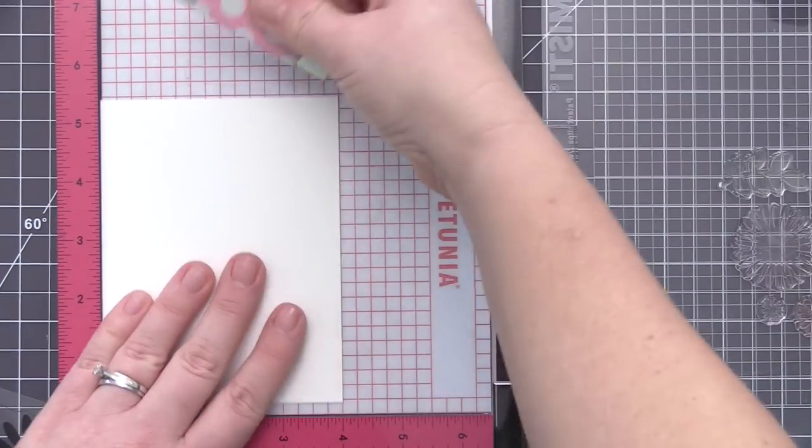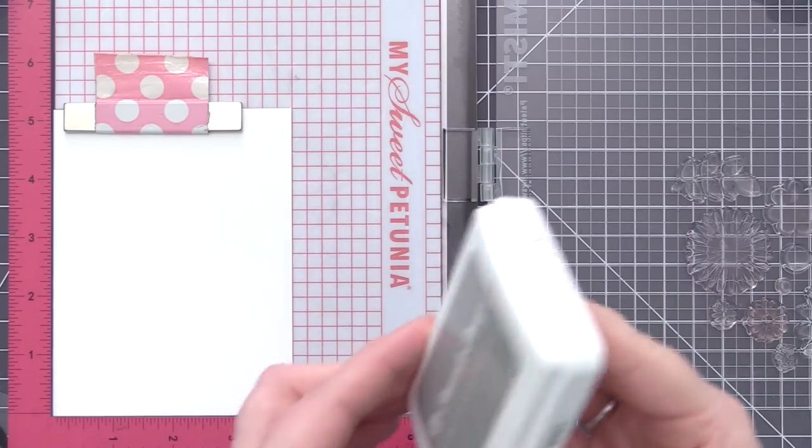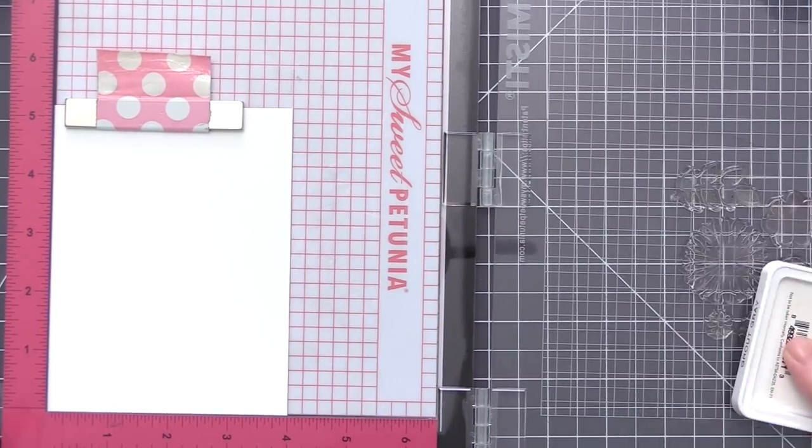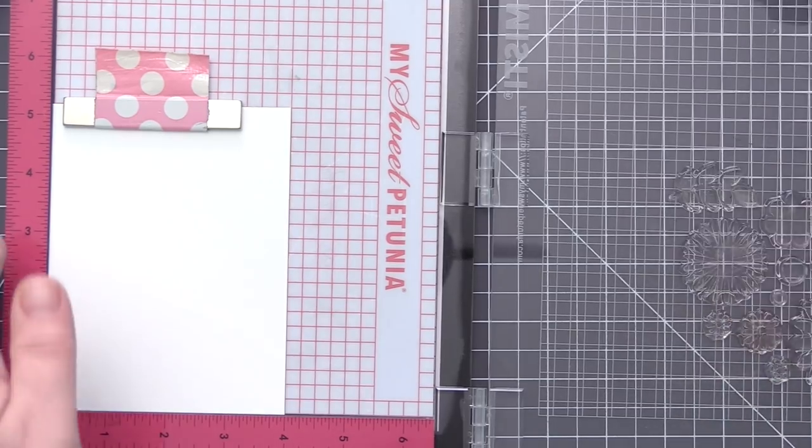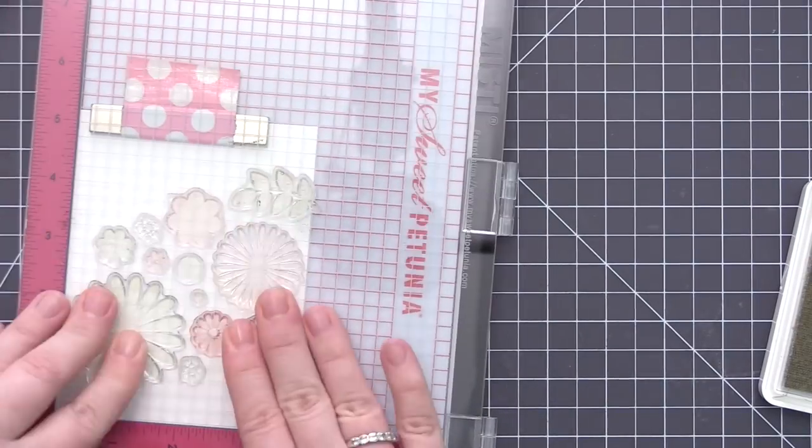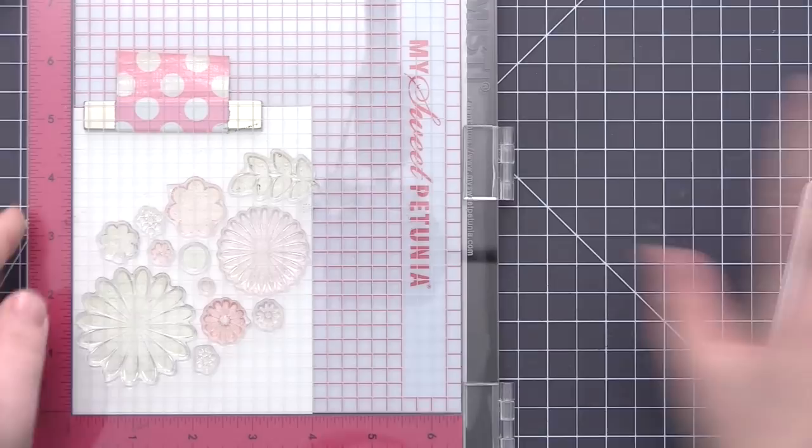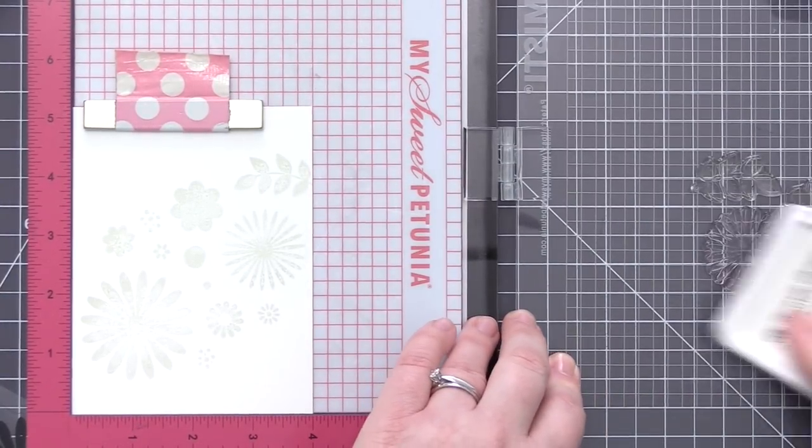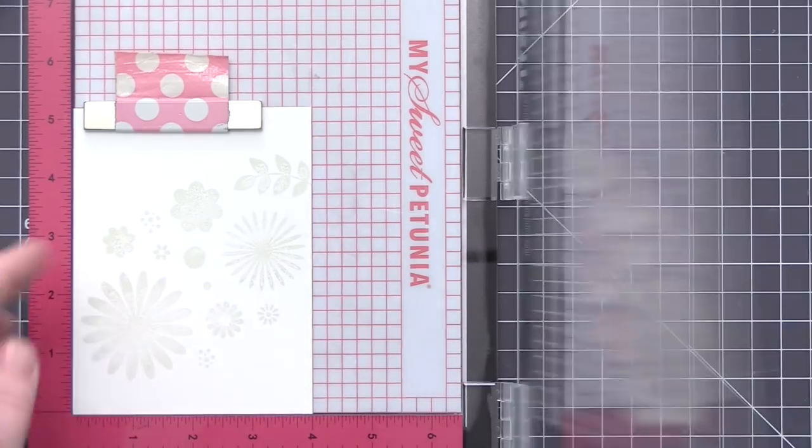So once I was happy with my flower placement, I'm going to pick everything up on my Misti and I'm going to stamp this out with some Grout Gray ink. So I'm just going to fully coat all of these stamps with this ink and stamp it onto my panel. Now with any solid stamps, I usually like to stamp them at least twice to get a really nice solid impression. So I am going to do that here on these panels.